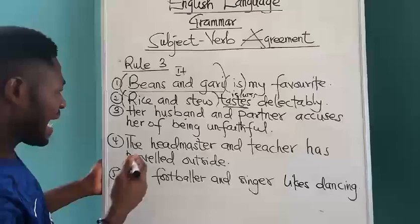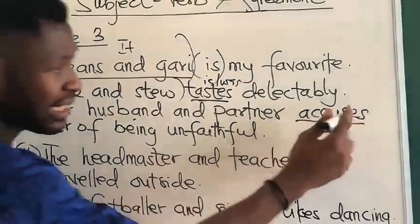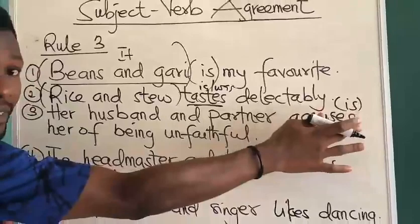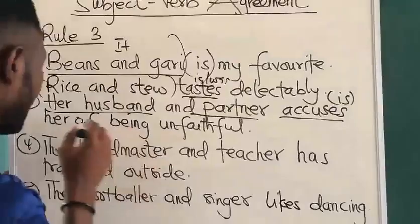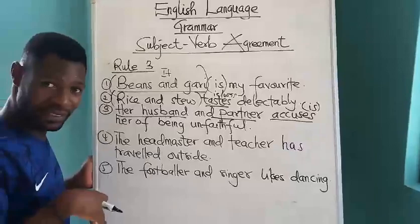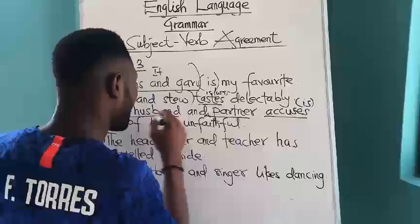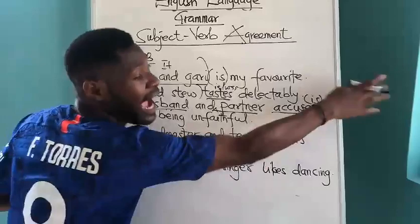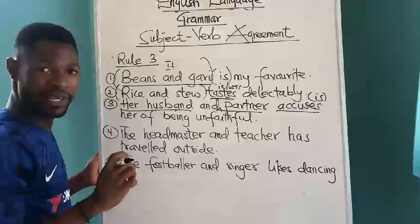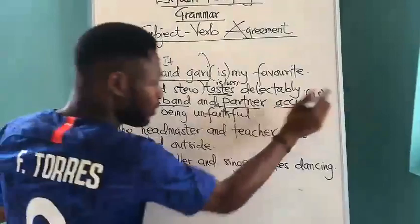Now we come to more complex examples. 'Her husband and partner accuses.' A verb plus S is just like 'is' — that is, singular. Her husband and partner is seen as one — the husband and also her partner. It is different from saying 'her husband and the partner.' If we introduce a determiner or article like 'the', we will say 'accuse' without an S. But once we don't have that determiner there, we will see this as one thing — so 'accuses'.